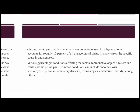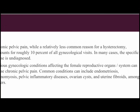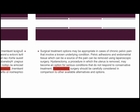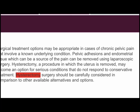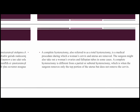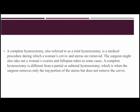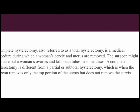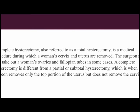Chronic pelvic pain, while a relatively less common reason for a hysterectomy, accounts for roughly 10% of all gynecological visits. Various gynecologic conditions affecting the female reproductive organs can cause chronic pelvic pain, and surgical treatment options may be appropriate in cases involving a known underlying condition. Hysterectomy surgery should be carefully considered in comparison to other available alternatives. A complete hysterectomy, also referred to as a total hysterectomy, is a procedure during which a woman's cervix and uterus are removed — the surgeon might also remove the ovaries and fallopian tubes. This is different from a partial or subtotal hysterectomy, where only the top portion of the uterus is removed but the cervix is not.